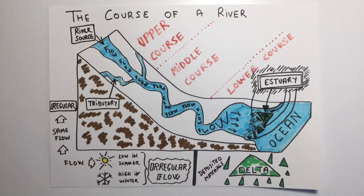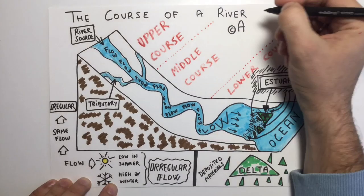To finish, the course of a river is divided into three parts: upper course, middle course, and lower course.